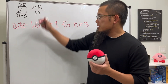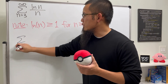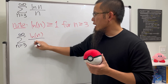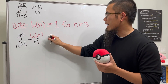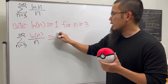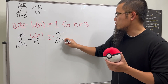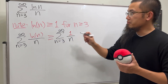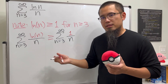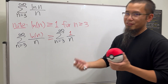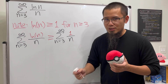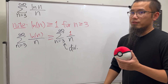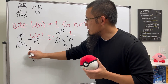Based on this, we know the series as n goes from 3 to infinity of ln(n)/n will be greater than or equal to the series as n goes from 3 to infinity of 1/n. Of course, this is the harmonic series — even though it misses the first two terms, it still diverges.